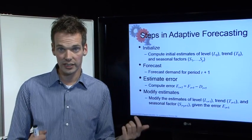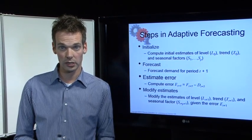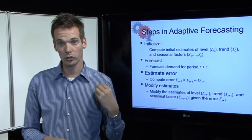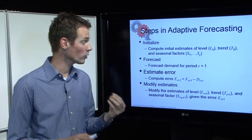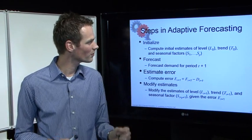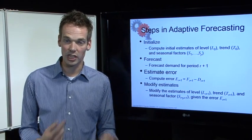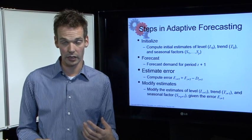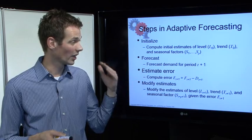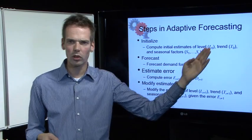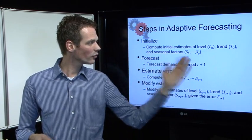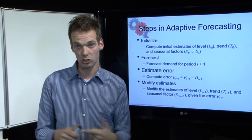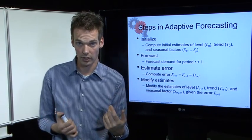When we use adaptive forecasting, we work always in four steps. The first step is initialize. We need to establish an initial estimate for level, for trend, and the seasonal factors for season 1, season 2, season 3, season 4, and so forth.